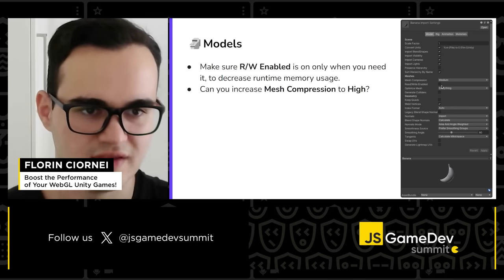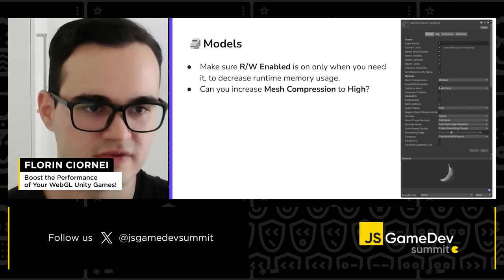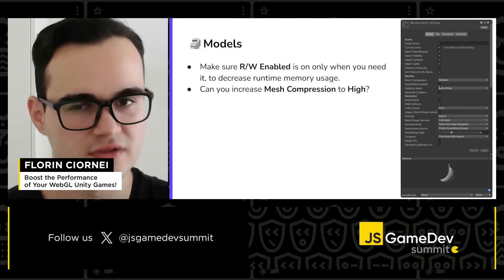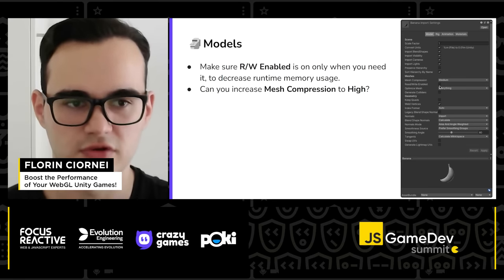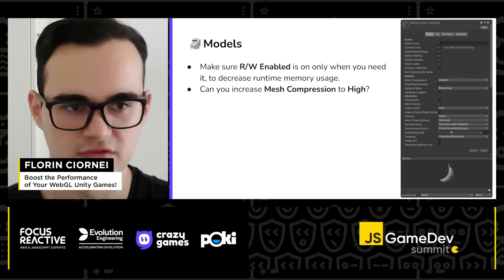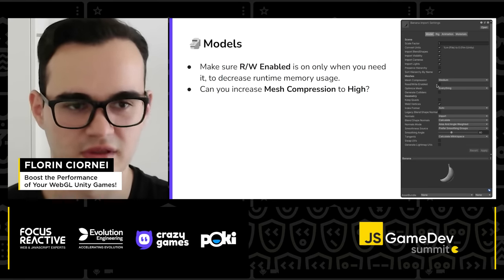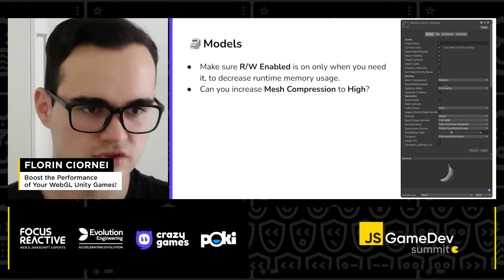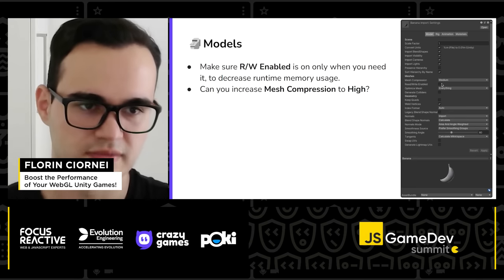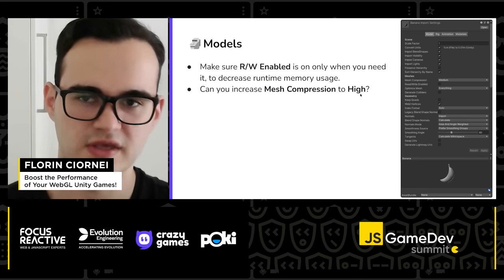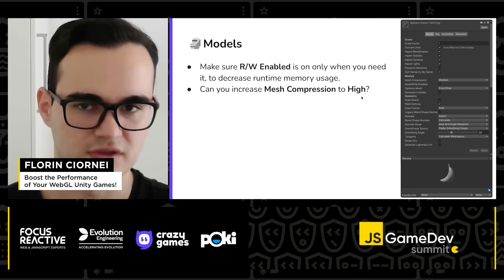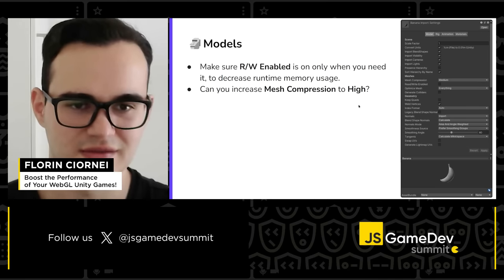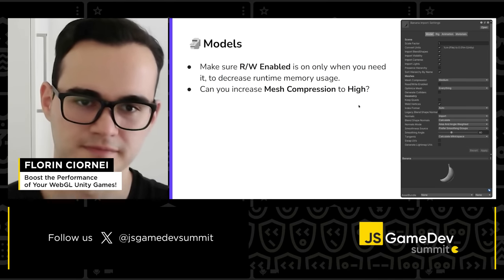About models: if you enable read/write on a model, keep in mind that it needs to be kept in runtime memory, so it's better to keep it disabled — and by default it is disabled. Also check if you can increase mesh compression to high, for example for a mountain in the distance that doesn't need to be high quality.